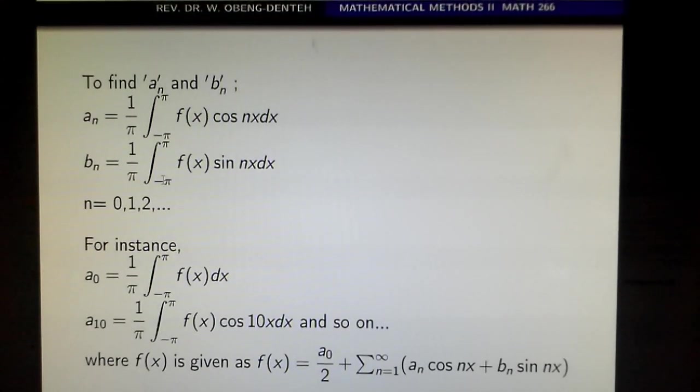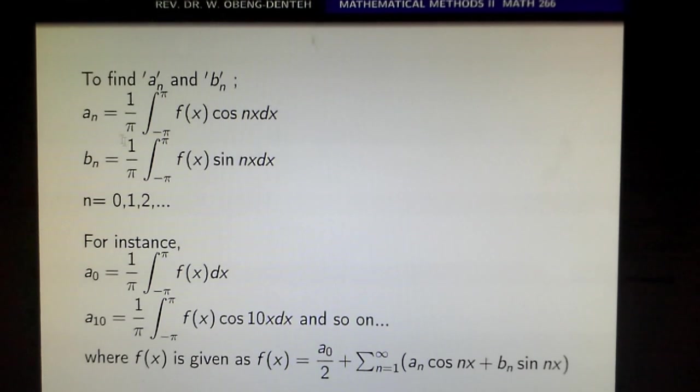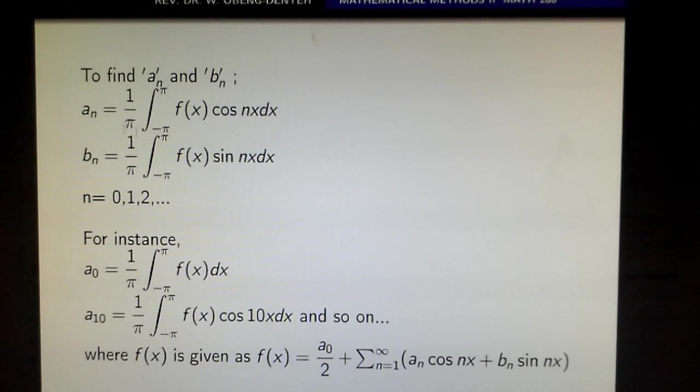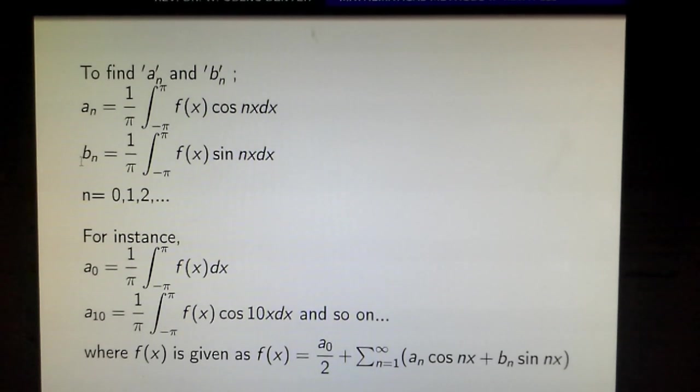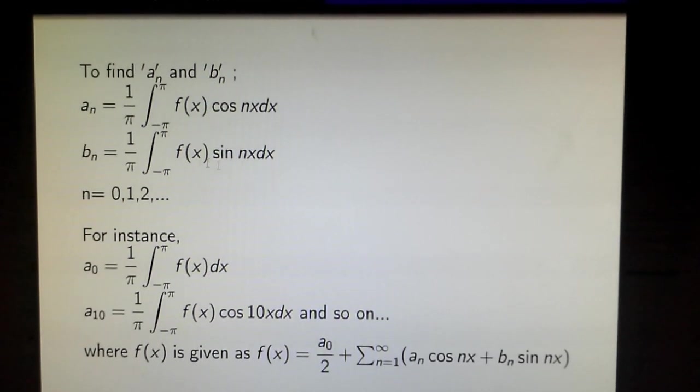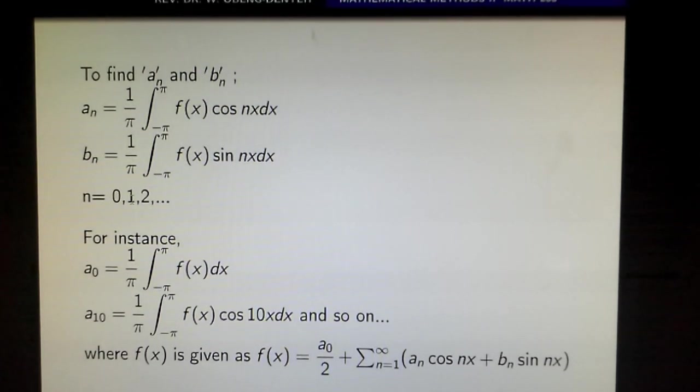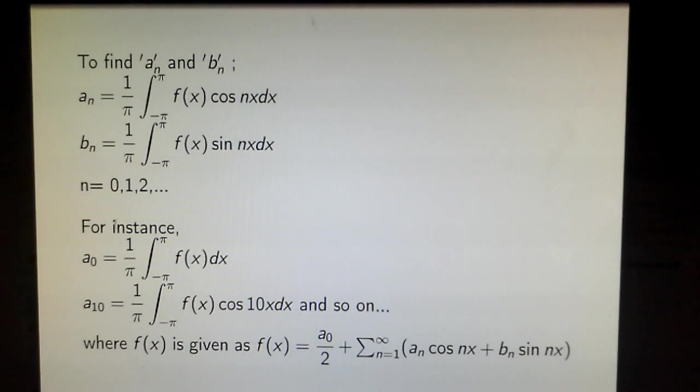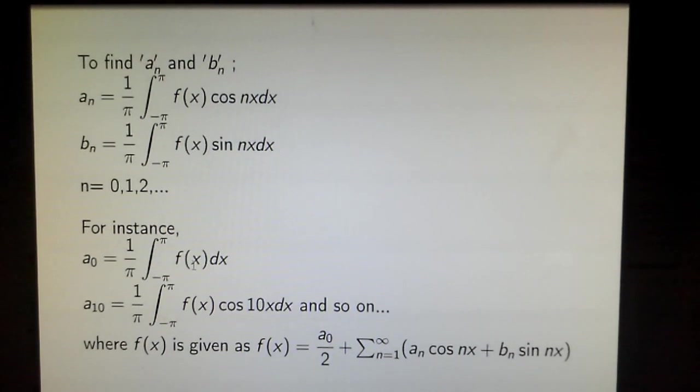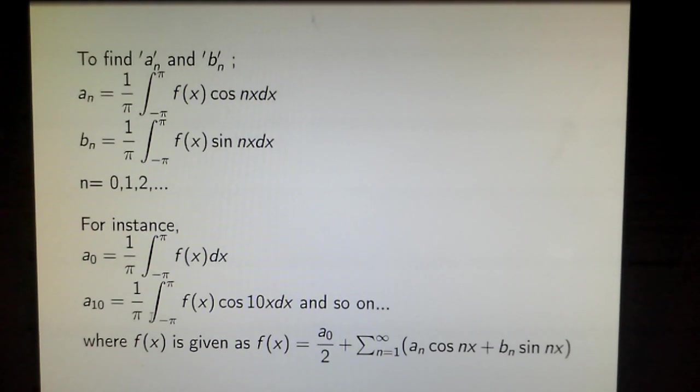To find a_n and b_n, we have a_n = (1/π)∫f(x)cos(nx)dx and b_n = (1/π)∫f(x)sin(nx)dx where n = 0, 1, 2,... For instance, a_0 is given by (1/π)∫f(x)dx, and a_10 will also follow this pattern.